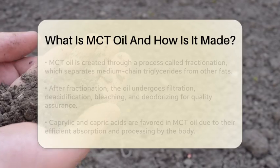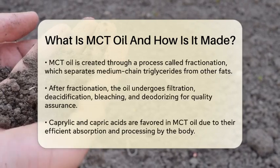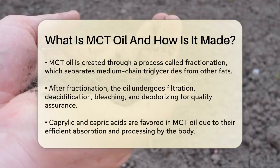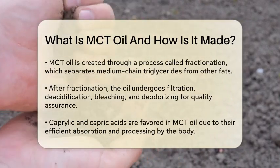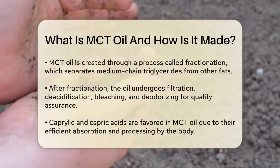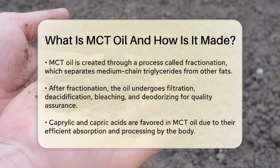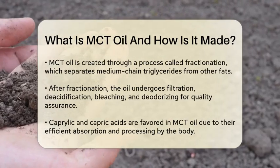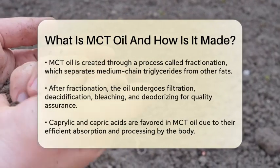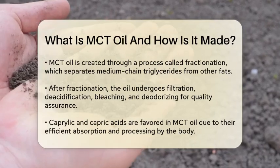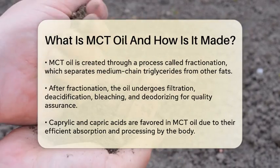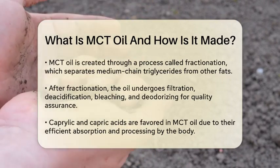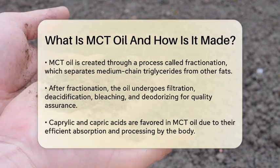So how is MCT oil made? The process starts with a method called fractionation. This technique separates medium-chain triglycerides from other fats present in coconut or palm kernel oil. After fractionation, the oil undergoes additional steps such as filtration, deacidification, bleaching, and deodorizing. These steps ensure that the final product is of high quality and primarily contains caprylic and capric acids.